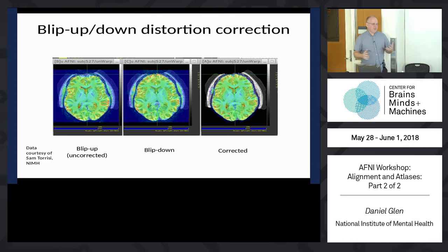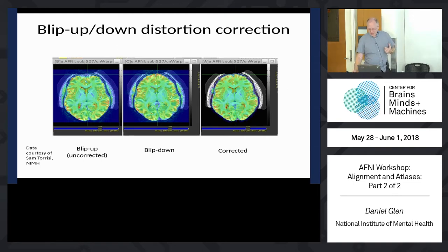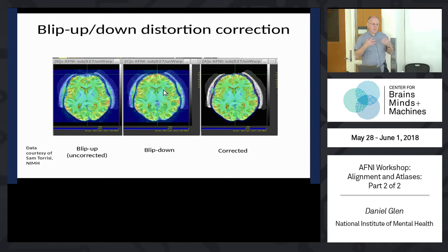Blip-up blip-down correction is a special acquisition procedure where you acquire your slices in one direction - maybe anterior to posterior within a slice - and then do another set of acquisitions posterior to anterior in the opposite direction. Depending on your scanner and the subject, you'll have some distortions. When you flip the direction, you get some of those parts back. We say the correct distortion is somewhere in between - we pick the halfway in-between distortion non-linearly, aligning the blip-up to the blip-down and taking the halfway transformation.